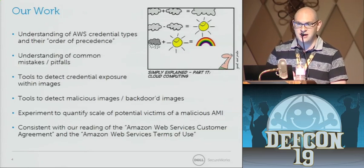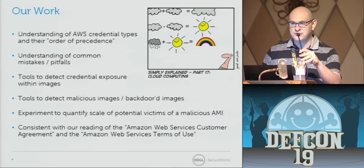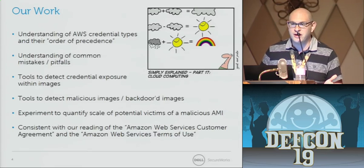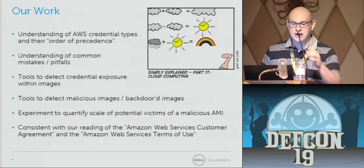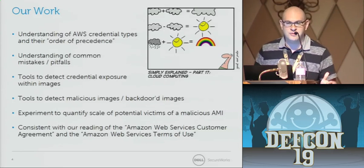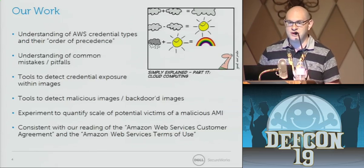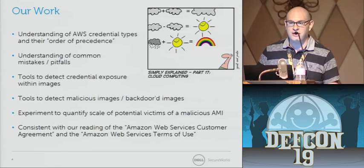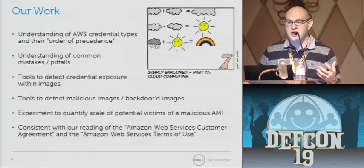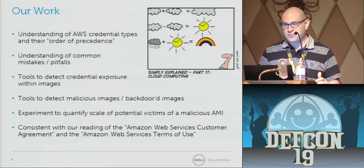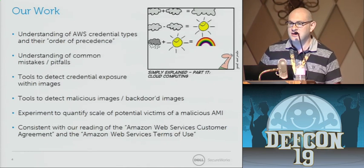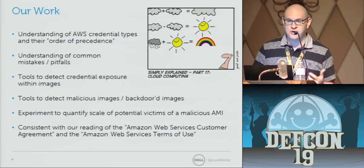So what are we going to be talking about today? When we set out to start this work some months ago, we wanted to first understand more about Amazon's cloud platform. We didn't set out to pick on Amazon, but they're the big gorilla in the room when it comes to public clouds and infrastructure-as-a-service clouds. We wanted to understand all the different types of credentials you use with Amazon Web Services and the order of precedence of those credentials — what could you do with one type, and what other credentials could you control or manipulate. Also, understanding common mistakes and pitfalls of organizations using Amazon's cloud services and easy ways to make bad mistakes.